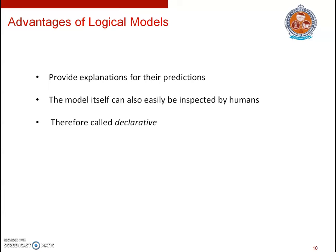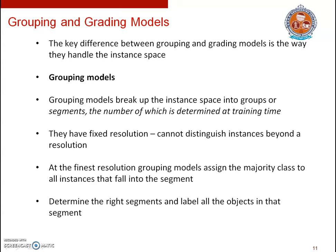The second way of classifying models is into grouping and grading models. The key difference between them is how they handle the instance space. Grouping models break the instance space into groups or segments, the number of which is determined at training time. Grouping models have a fixed and finite resolution and cannot distinguish between individual instances beyond this resolution. What they do at the finest resolution is often something very simple, such as assigning the majority class to all instances in that segment. The main emphasis of training a grouping model is on determining the right segments.